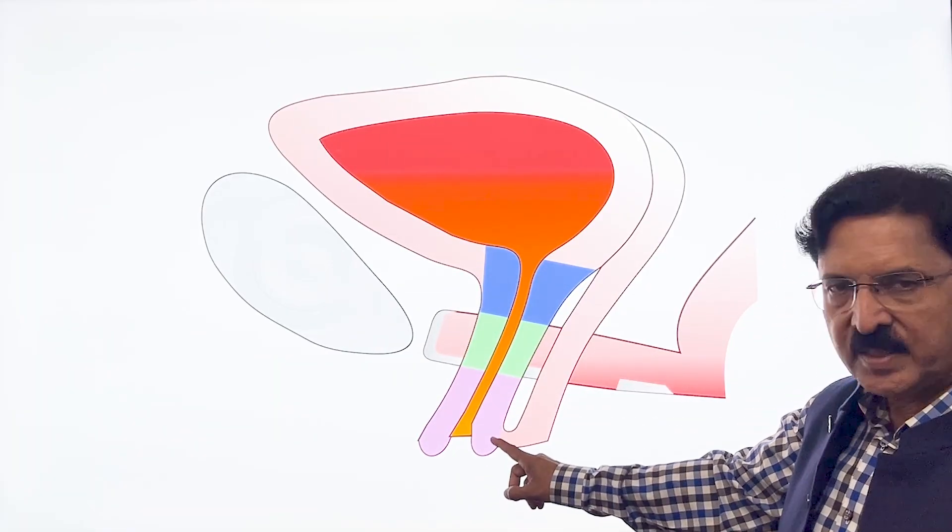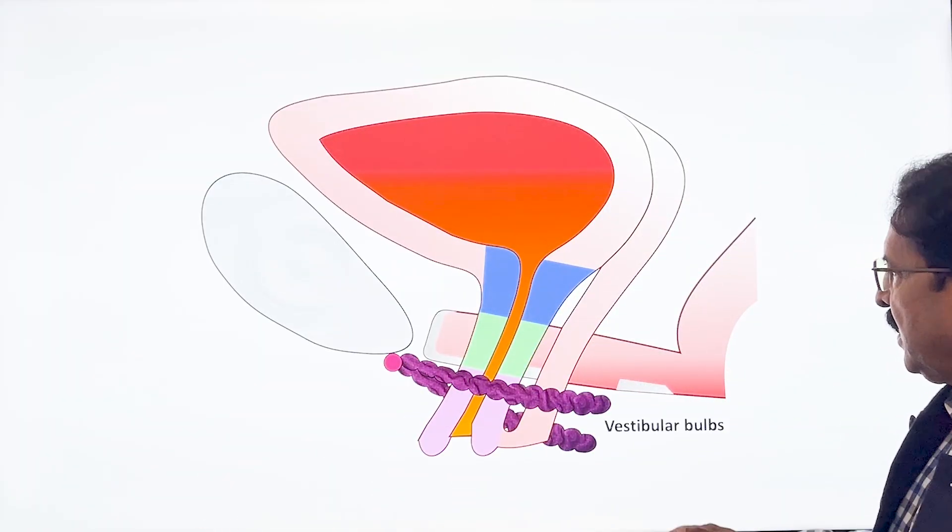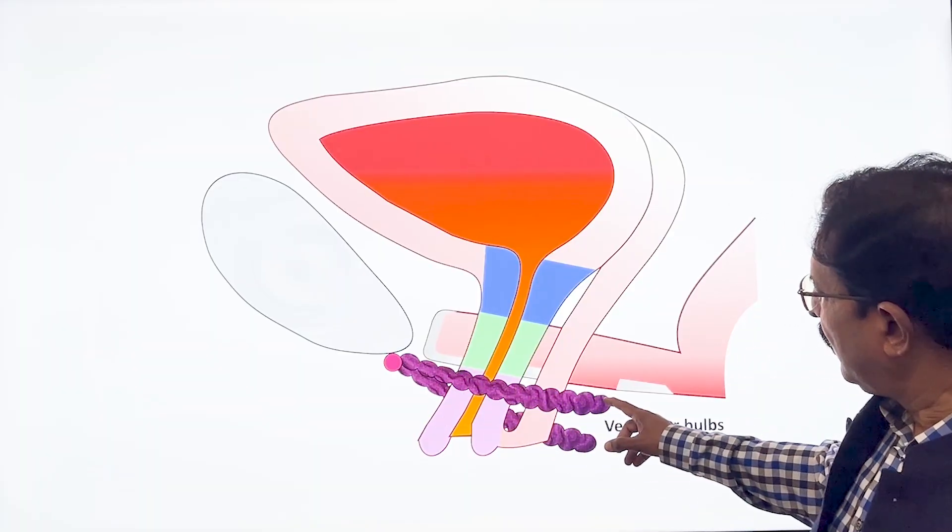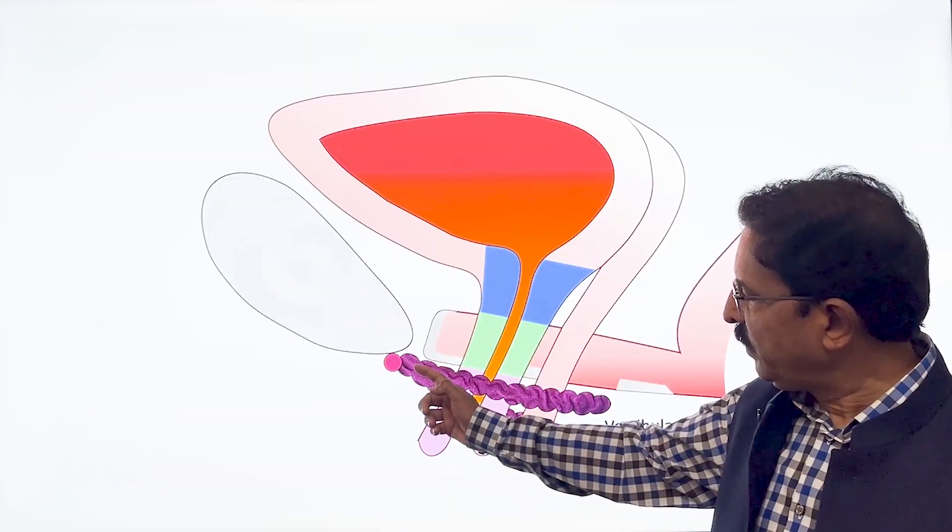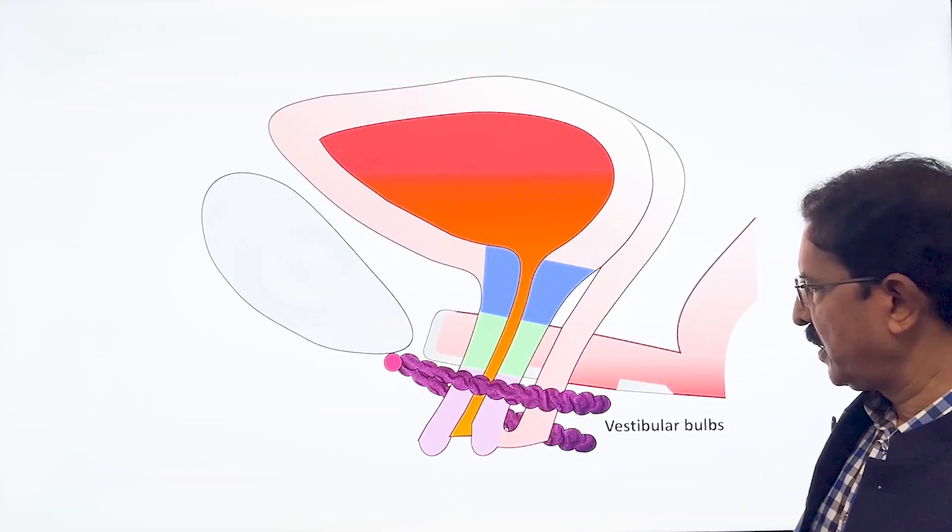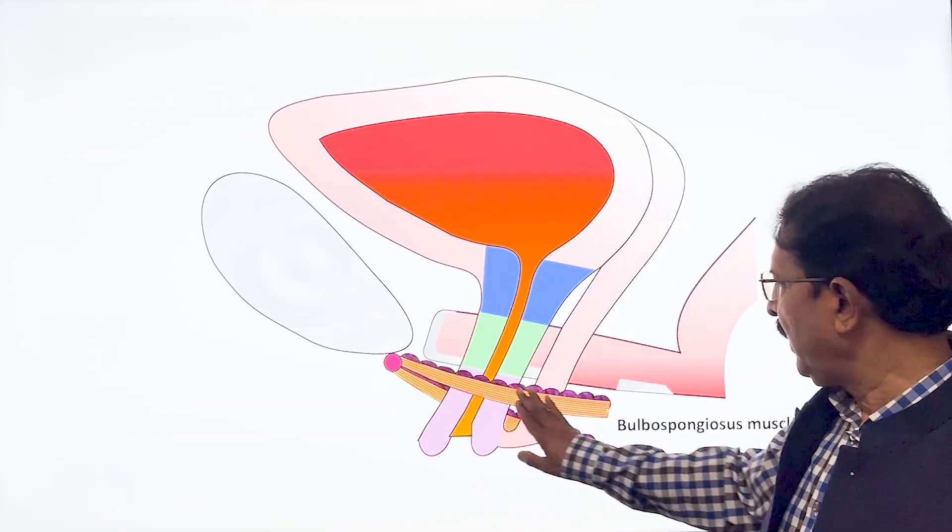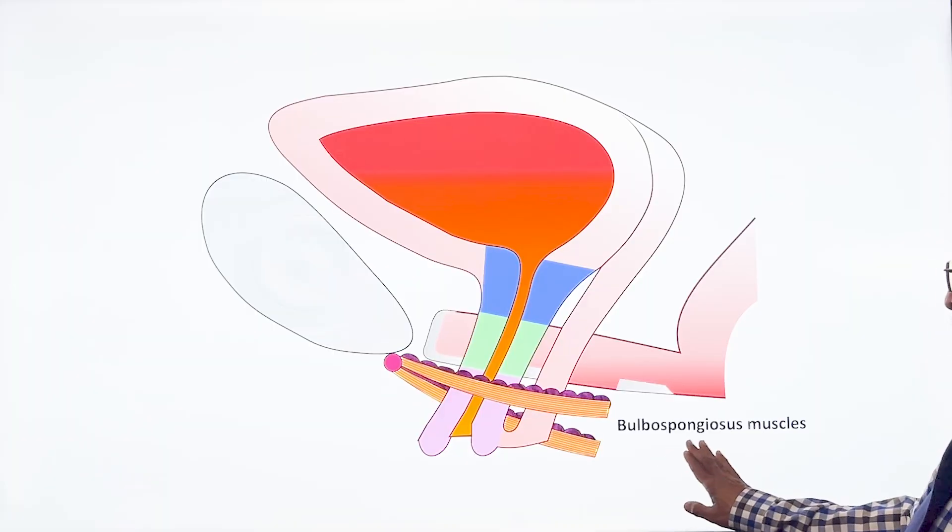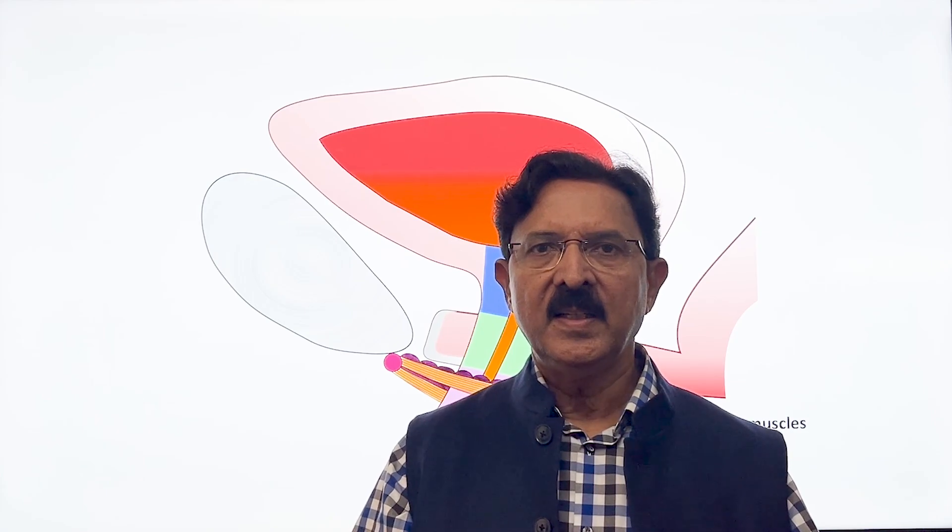So what is shown in purple is the distal urethra. If you see its relationships, what lies around it or by the side of it, the first structure that you will see is the vestibular bulbs on one side and then on the other side, and they traverse anteromedially to meet at the level of clitoris. Over and above the vestibular bulb is a wrapping of two muscles which are called bulbospongiosus muscle. So this distal urethra is anterolaterally related to these two structures in female vestibule.